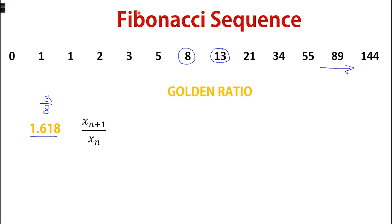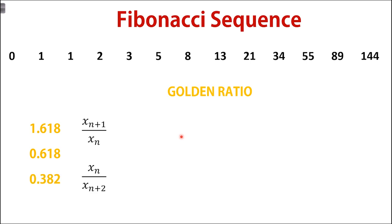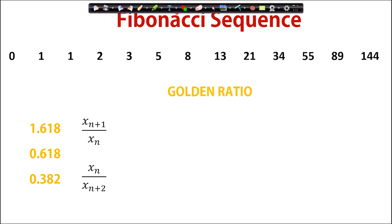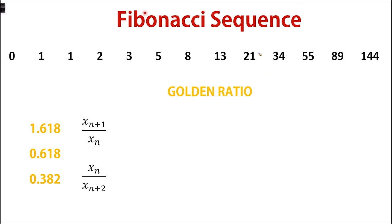The inverse of this golden ratio simply gives you 0.618. And the last number that interests us is 0.382. You can get this ratio when you take a number in the sequence and divide it by the number two places to the right of it. So 21 divided by 55 will give you an answer close enough to 0.382, and as we progress further into the sequence, the ratio approximates to 0.382.